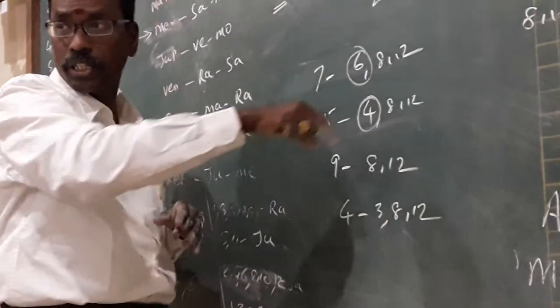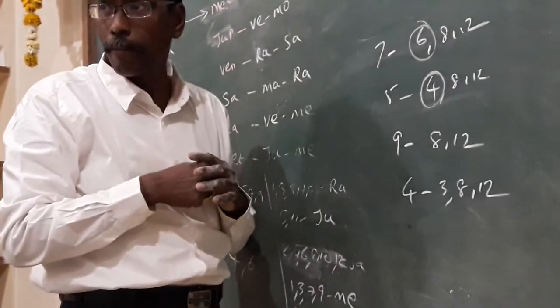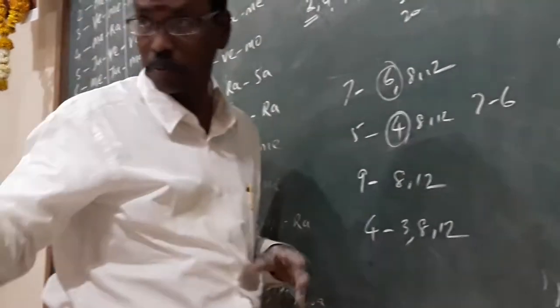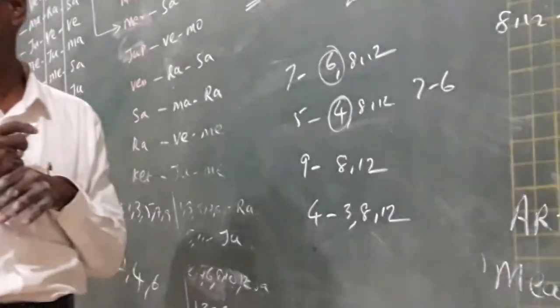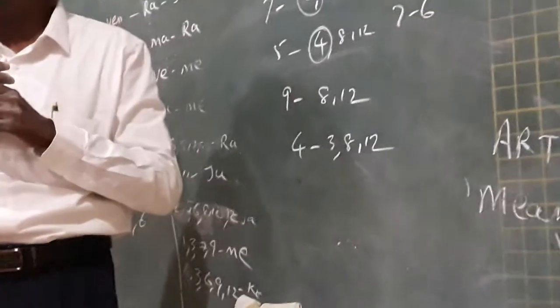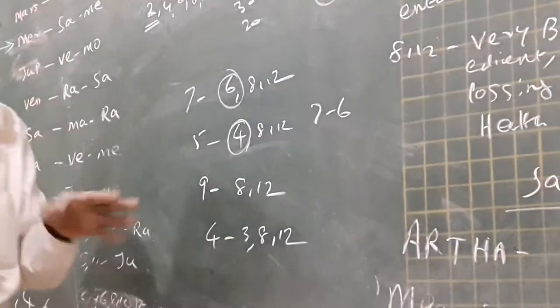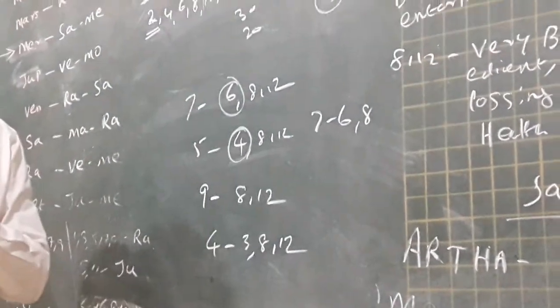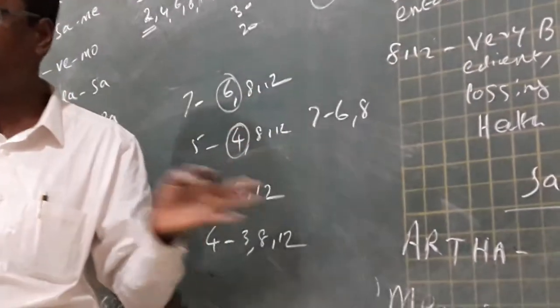8th house is common, but for 5, 4th house is not common. Actually, 7th sub-lord is connected only 6 means no problem. Only 6 means no problem. If it is connected with 8th house, it is very bad.